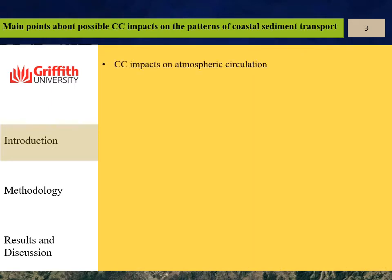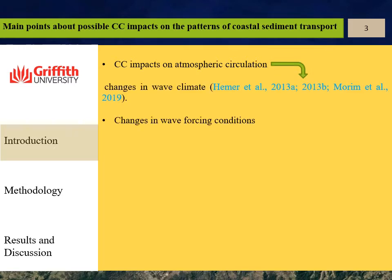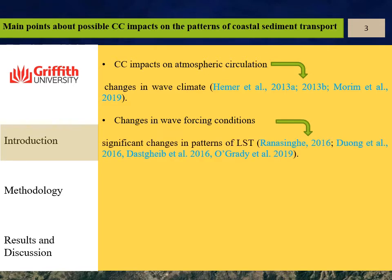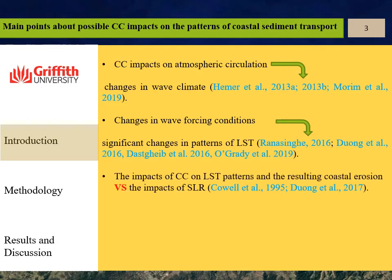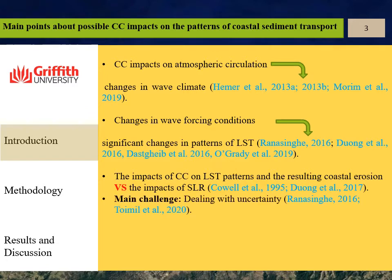It is claimed that climate change impacts on atmospheric conditions could lead to changes in wave climate in many coastal regions around the world. On the other hand, any changes in wave forcing conditions could result in significant changes in the patterns of longshore sediment transport. Even the impact of climate change on longshore sediment transport patterns and the resulting coastal erosion can be comparable to the impact of sea level rise.